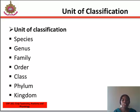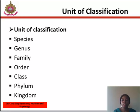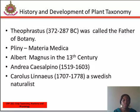Five, class — a group consisting of a number of similar orders. Six, division or phyla — a group of similar classes. Lastly, kingdom — a group of many divisions; it is the highest unit of classifying plants, and all plants belong to the kingdom Plantae.